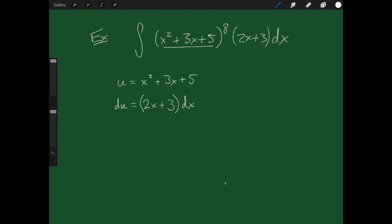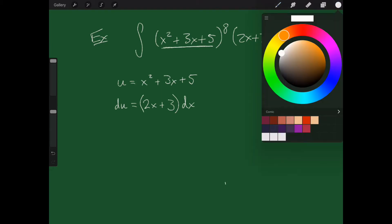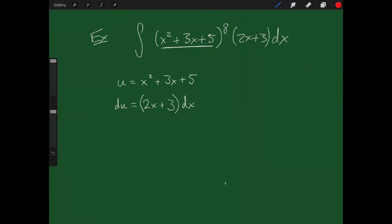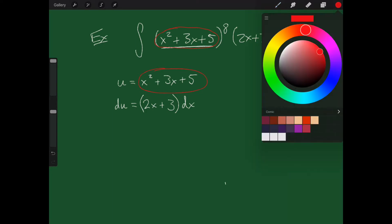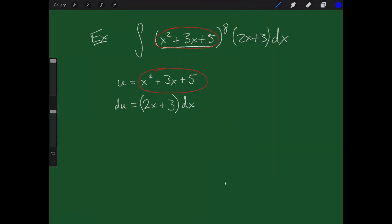So what I'm going to do is notice, come back up here. Maybe I'll grab a different color. So I'm going to circle this guy, x² + 3x + 5. Let's grab another color. I've got 2x + 3, 2x + 3 dx.